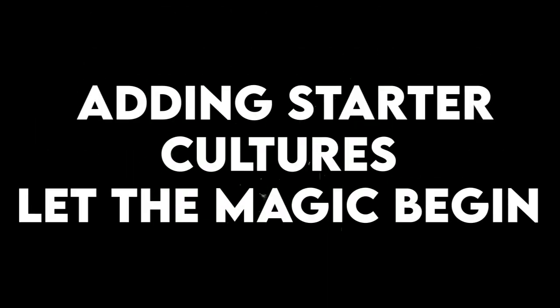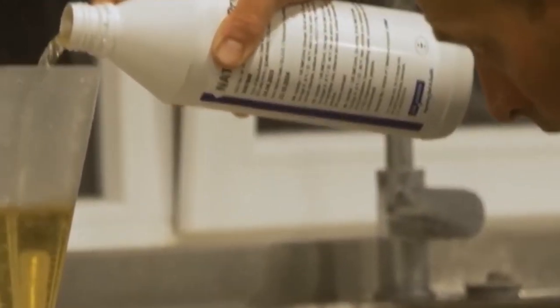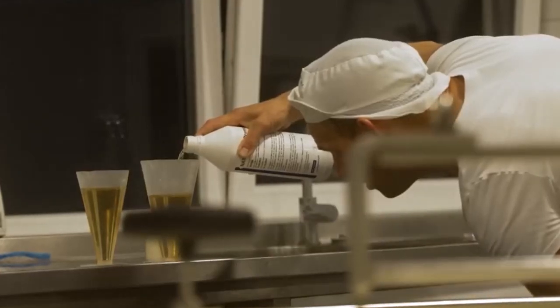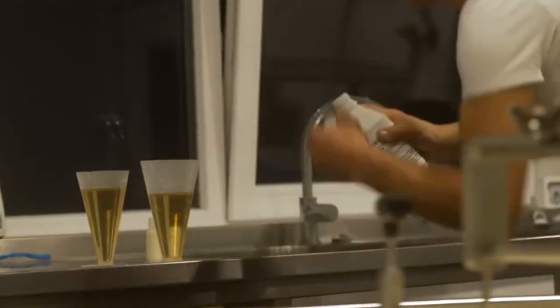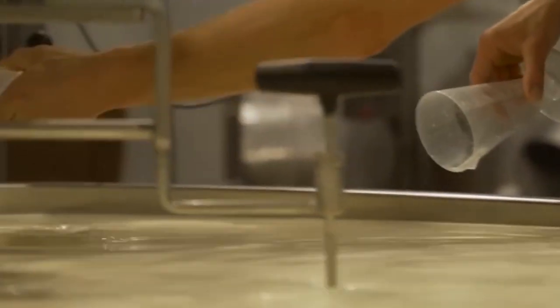Adding starter cultures: let the magic begin. Next, it's time to add some special bacteria to the milk. These are called starter cultures, and they're actually good bacteria that help start the cheesemaking process. These friendly bacteria eat the milk sugar, which is called lactose, and turn it into lactic acid. This acid makes the milk thicker and gets it ready to form curds, which are the soft, solid parts that will become cheese.